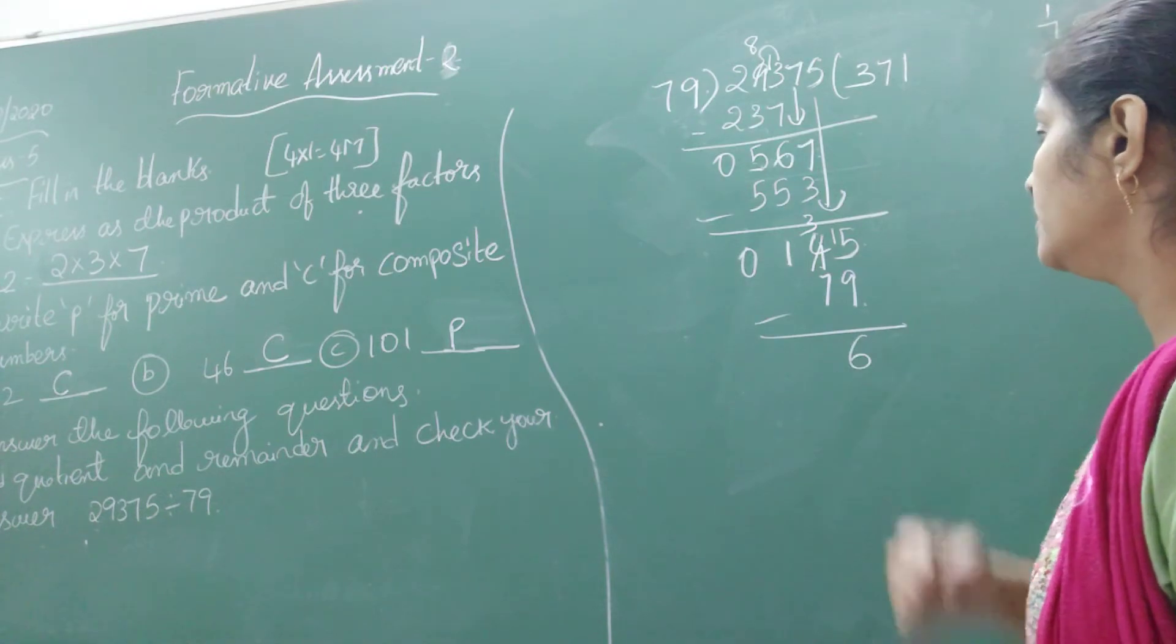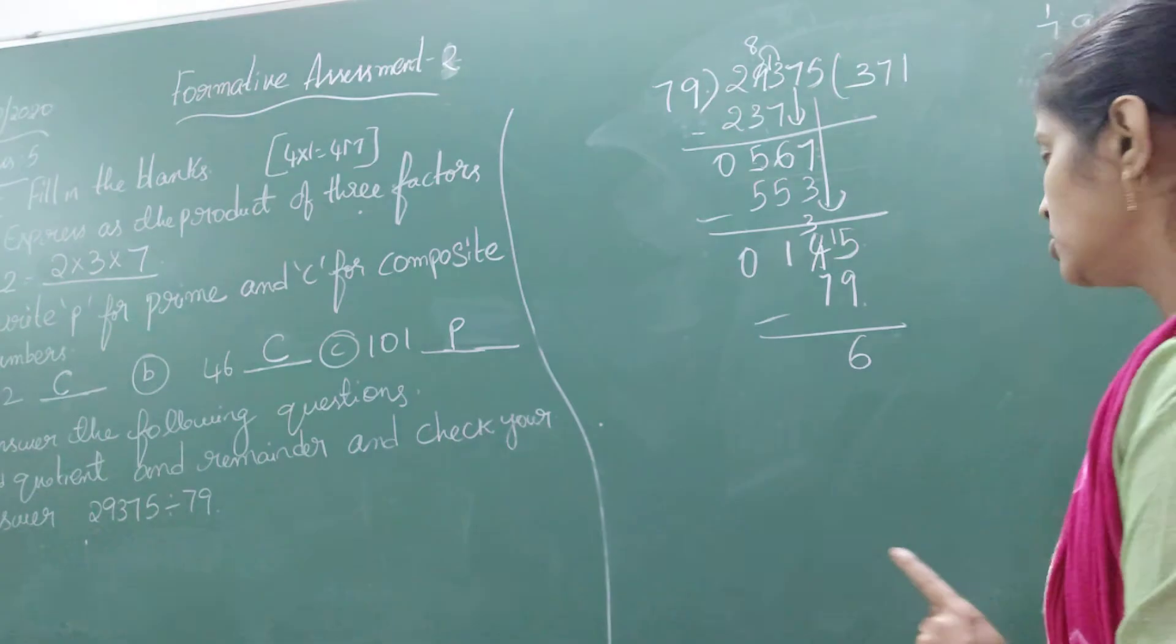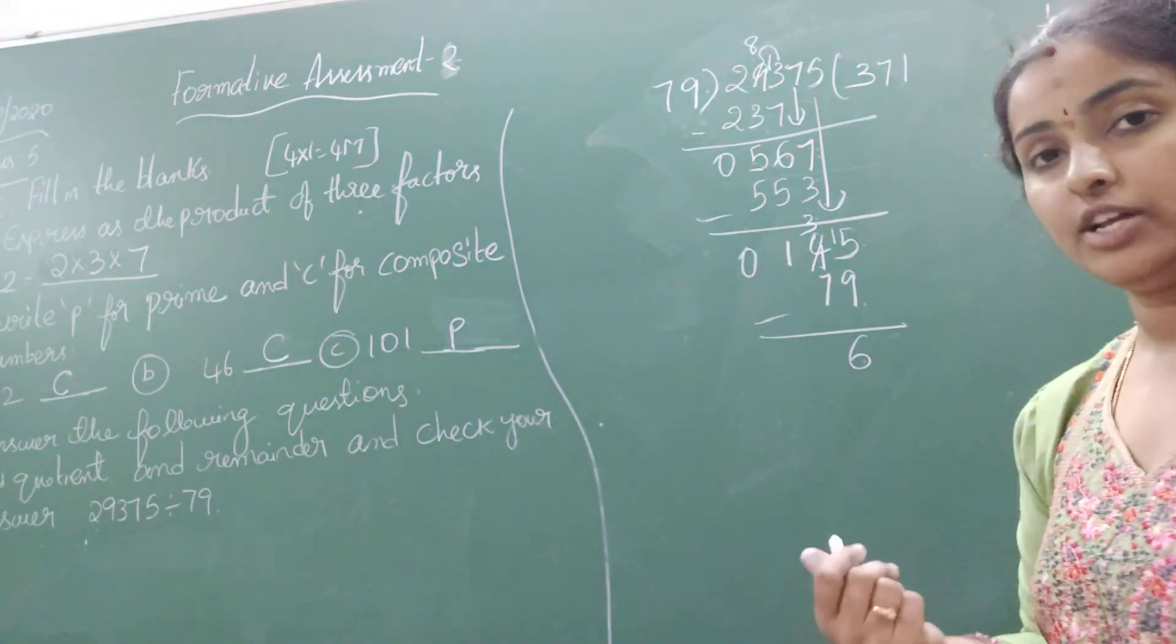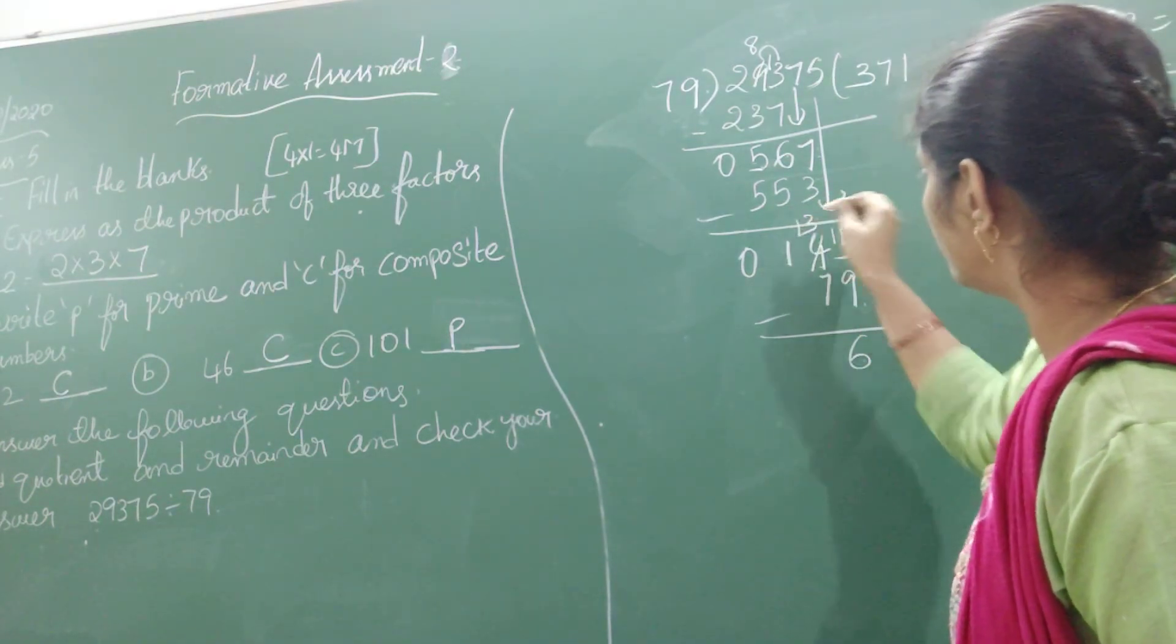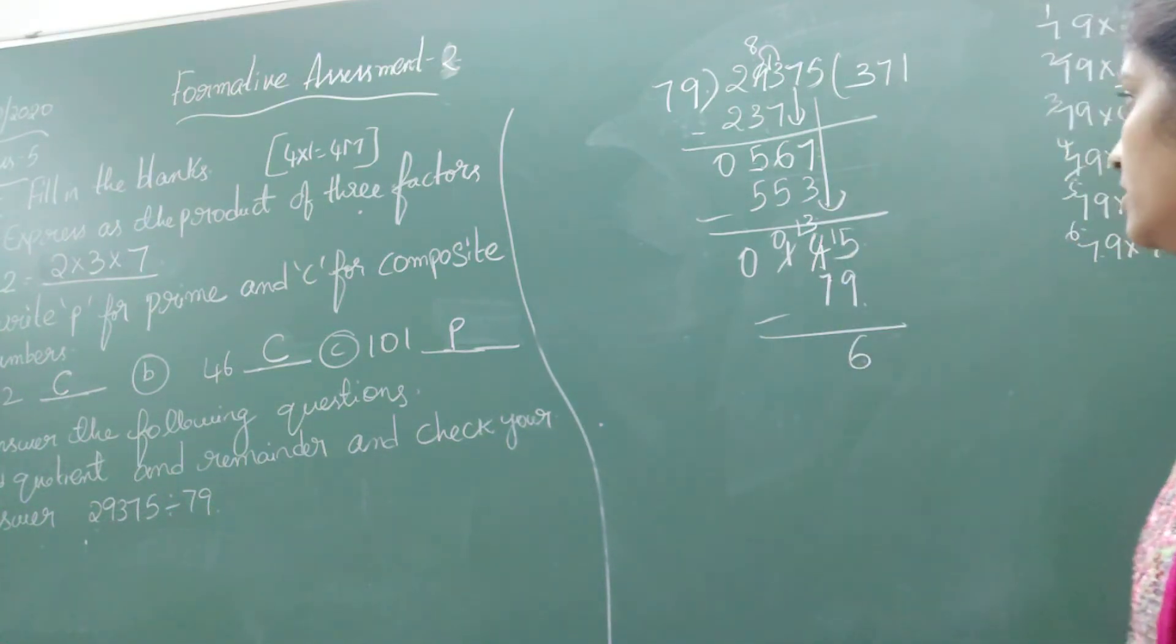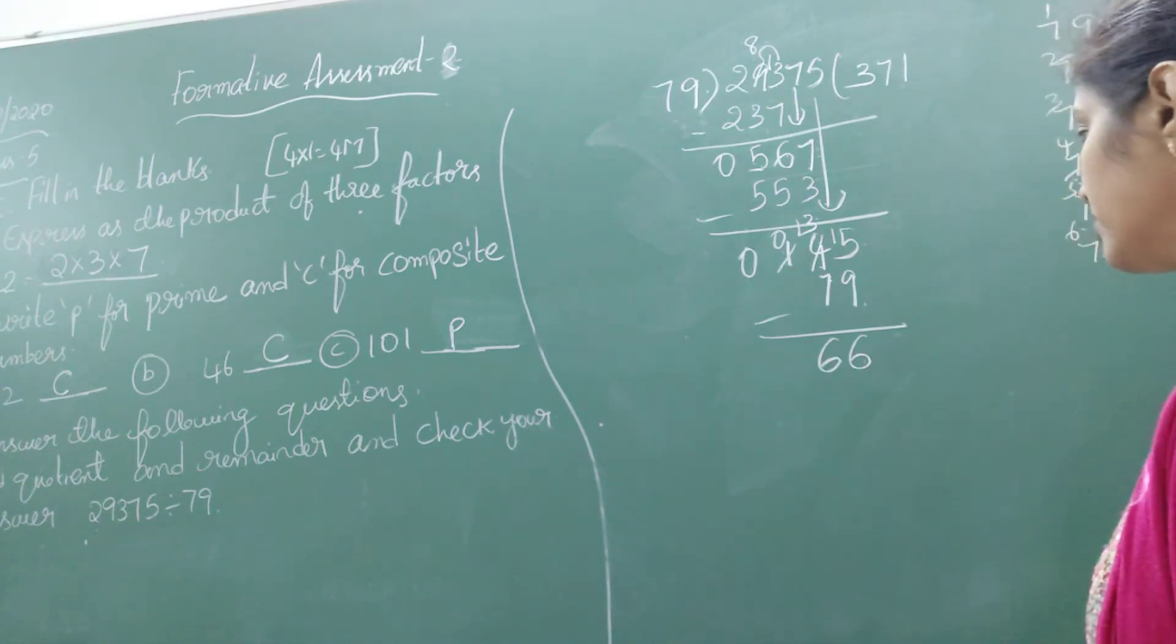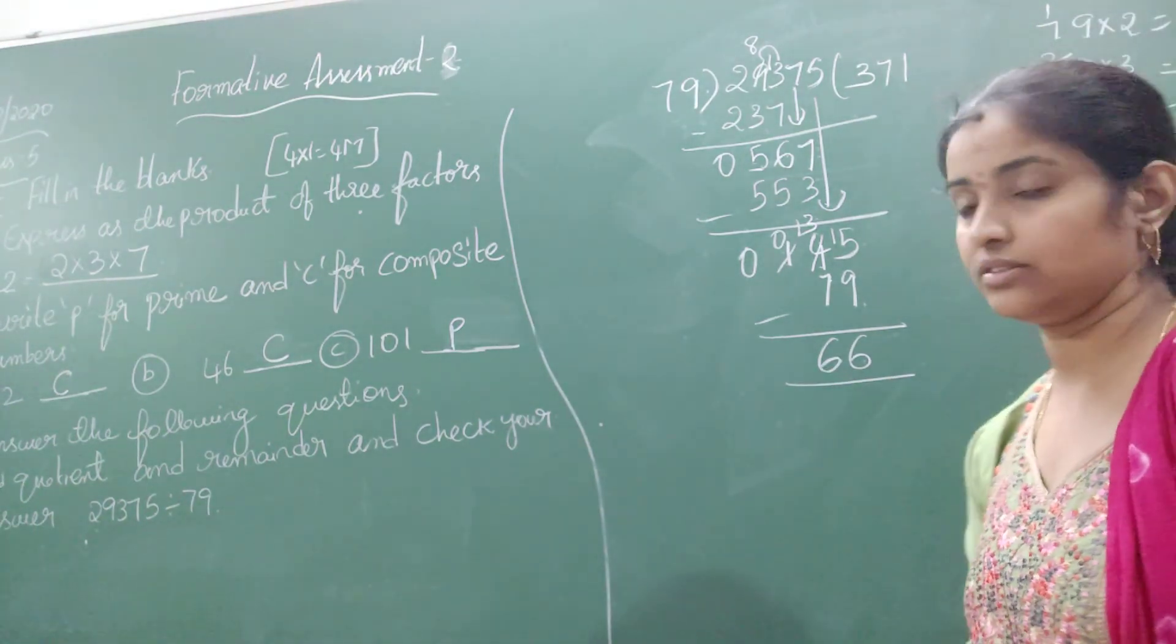3 minus 1 is not possible, so take a borrow. You will get 1 here and 0 here. Then 13 minus 7 is 6. So I got the remainder 66.